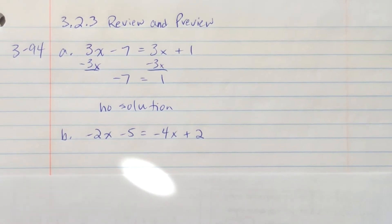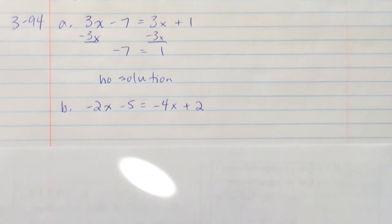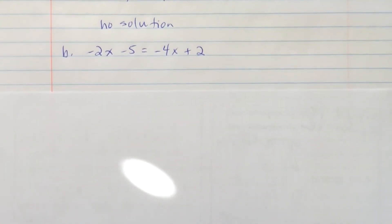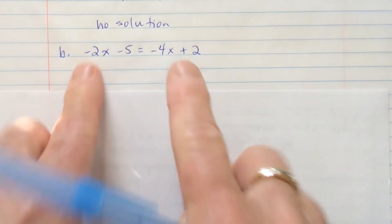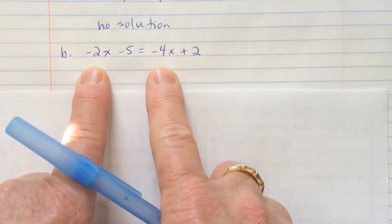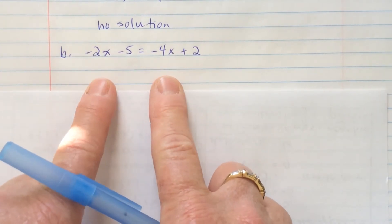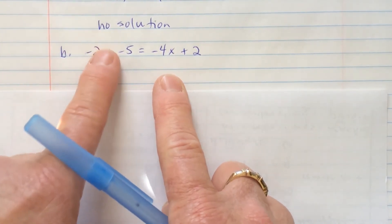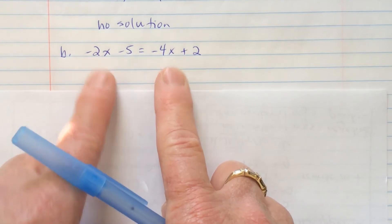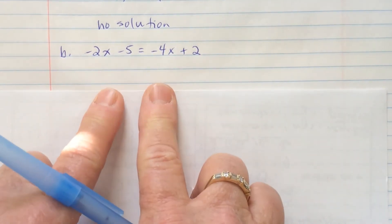B, negative 2x minus 5 equals negative 4x plus 2. Again, I need to get the x's on one side. So, there are different ways of doing this. I could take away negative 2x from here and take away negative 2x from here. Or I could add 2x to both sides.